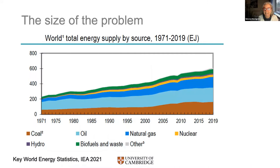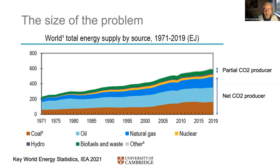A lot of our energy either produces net CO₂ or partial CO₂ if you count biofuels. This represents a huge installed base — shifting to renewables is an enormous challenge. It's quite likely we continue using these sources better, or with fuels that don't produce as much net CO₂. Combustion is absolutely everywhere — even talking about electrifying lots of things, the things that produce electricity need to be zero carbon.